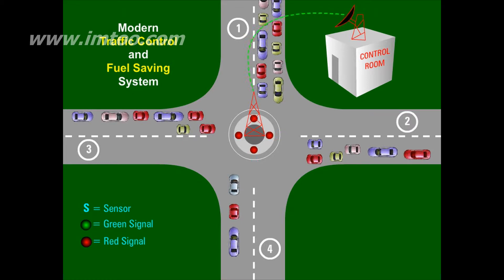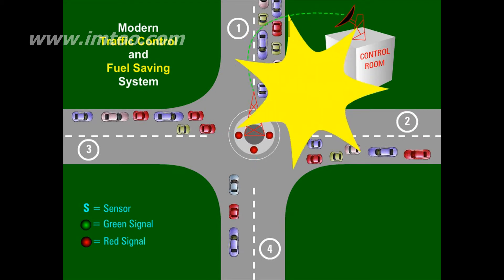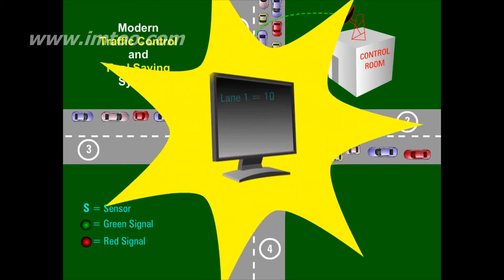All that happens is that the sensors on traffic light detect the number of vehicles which are present in each lane and send it to control room where a specific software works and gives a green light to the lane with the maximum number of vehicles.